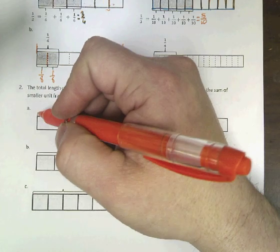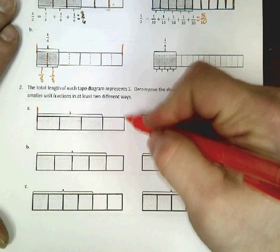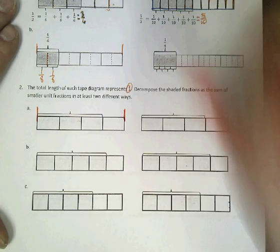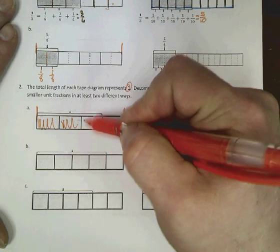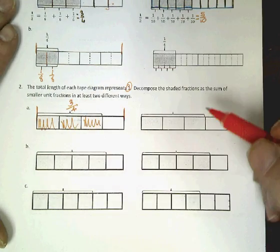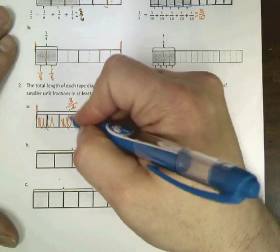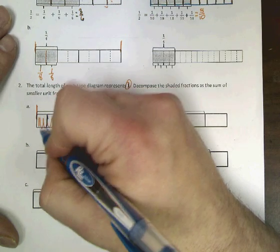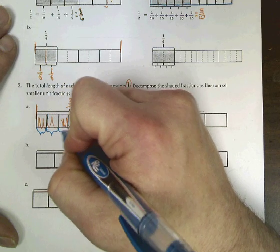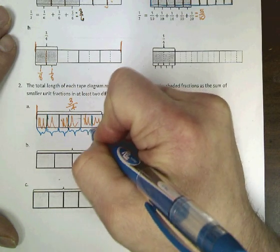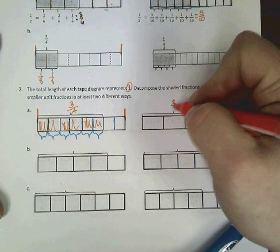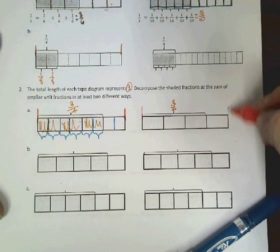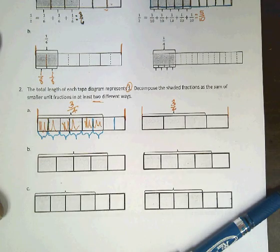For parts A, B, and C, they want you to take a fraction and use your tape diagram — that equals one, that represents one whole. Students should be able to recognize that these three shaded parts out of four means the fraction is three-fourths. They would then want you to divide each section further — so how much is that section going to be worth, and that one, and that one? Then you have the exact same drawing over here — another three-fourths — and decompose it a different way.